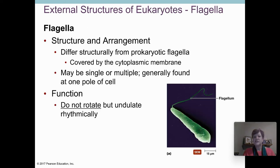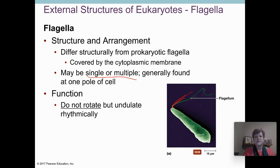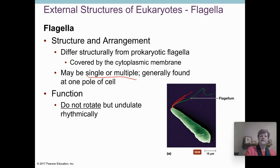Eukaryotic cells can have flagella. More often, a eukaryotic cell might have one flagellum or maybe a couple, but they tend to be all at the same end. You might have a single flagellum or maybe a couple at one end of the cell — you don't see a peritrichous arrangement. The flagella do not rotate like a propeller; they just move back and forth.